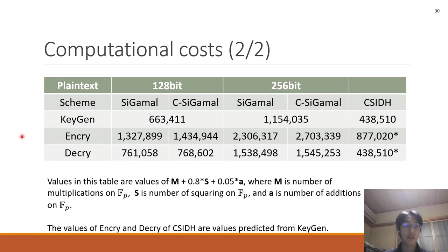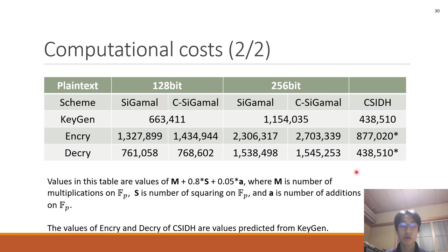And this is the result of our experimentation. Values in this table are values of M + 0.8·S + 0.05·A, where M is the number of multiplications over F_p, S is the number of squarings over F_p, and A is the number of additions over F_p. The values of encryption and decryption of CSIDH are values predicted from key generation. As shown in this table, in 128-bit, the cost of C-GAMMA and CC-GAMMA is about 1.5 times that of CSIDH. And in 256-bit, the cost of C-GAMMA and CC-GAMMA is about 3 or more times those of CSIDH.